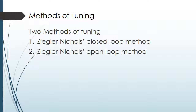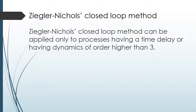For the methods of tuning: as mentioned in the introduction, there are two methods of tuning for the Ziegler-Nichols tuning method. These are the Ziegler-Nichols closed-loop method and the Ziegler-Nichols open-loop method. The Ziegler-Nichols closed-loop method can be applied only to processes having a time delay or having dynamics of order higher than three.